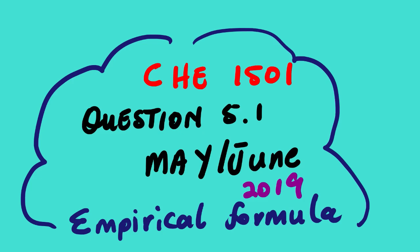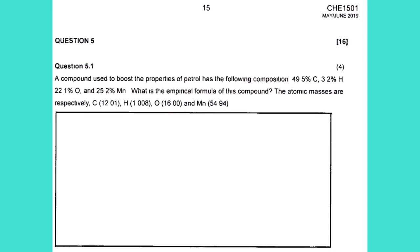Let us start. This is the actual question paper. Question 5.1 says: a compound used to boost the properties of petrol has the following composition — 49.5% carbon, 3.2% hydrogen, 22.1% oxygen, and 25.2% manganese. What is the empirical formula of this compound?